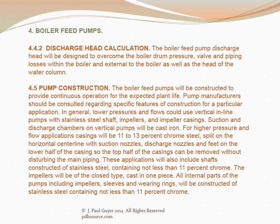The boiler feed pump discharge head will be designed to overcome the boiler drum pressure, valve and piping losses within and external to the boiler, as well as the head of the water column. For low pressures and flows, vertical inline pumps with stainless steel shaft impellers and impeller casings could be used. For higher pressure and flow applications, casings will be 11 to 13 percent chrome steel, split on the horizontal centerline with suction nozzles, discharge nozzles, and feet on the lower half so the top half can be removed without disturbing the main piping. Shafts will be stainless steel with not less than 11 percent chrome, impellers will be of the closed type cast in one piece, and all internal parts will be stainless steel containing not less than 11 percent chrome.